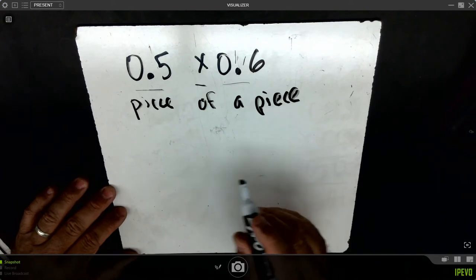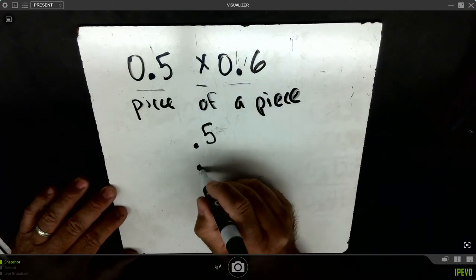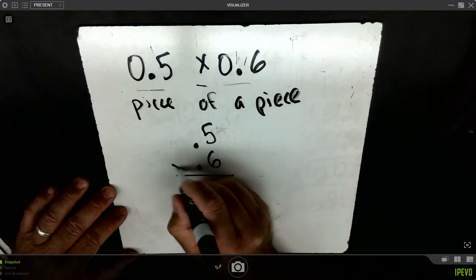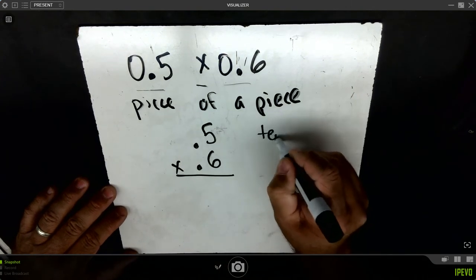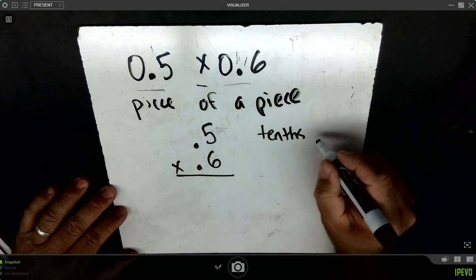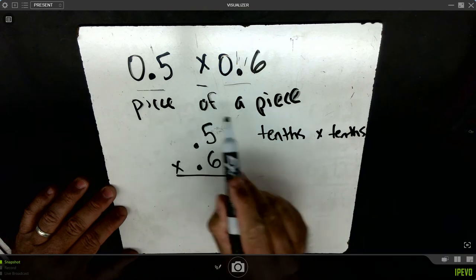Let's use the traditional method. We'll go ahead and line up our numbers. I see five tenths times six tenths. I see tenths times tenths. When I'm taking tenths times tenths, I'm taking a piece of a piece.